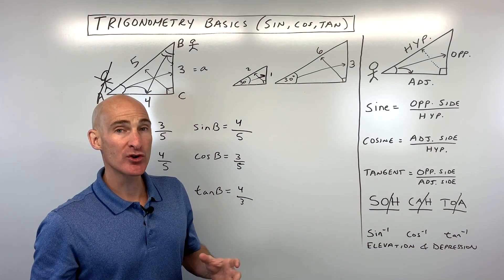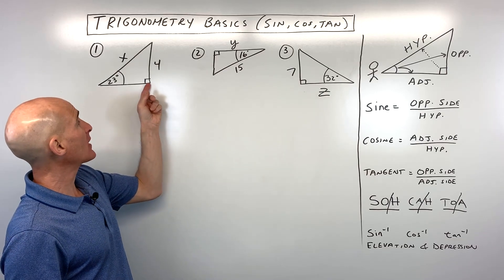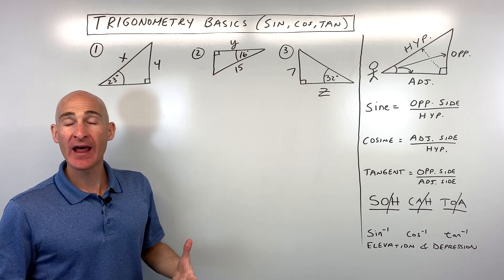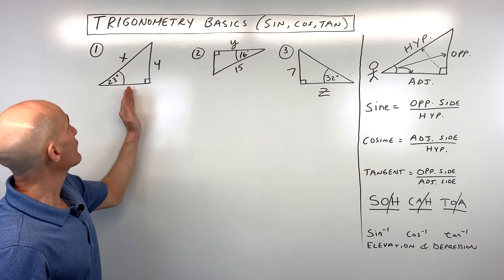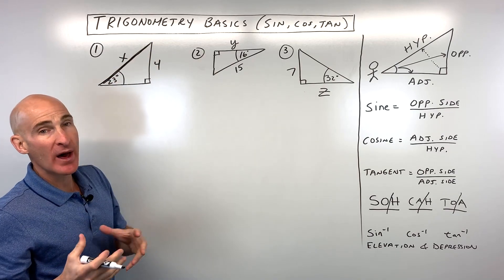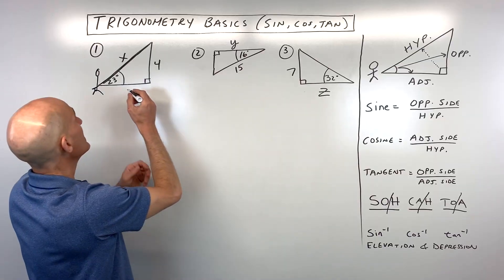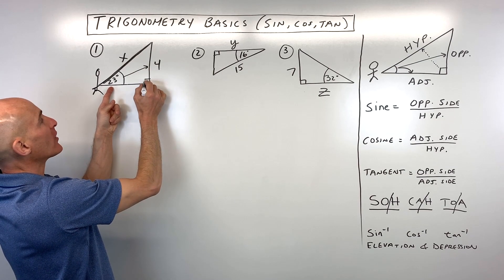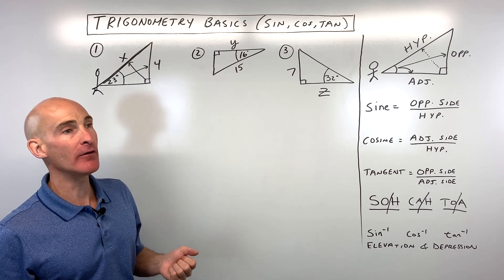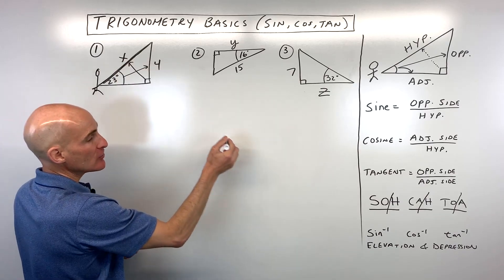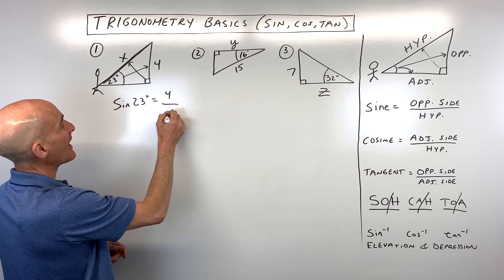Now let's do example problems where you're given an angle and want to find the missing side. This is right triangle trigonometry — you have a triangle with a 90-degree angle. For number one, we're solving for this missing side x. Position yourself at the angle and ask: what trig ratio — sine, cosine, or tangent — ties together this 23-degree angle, the opposite side of four, and the hypotenuse x? Opposite and hypotenuse — that's sine. So the sine of 23 degrees equals the opposite side four divided by the hypotenuse x.